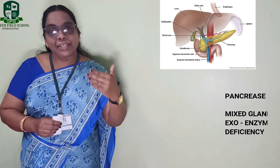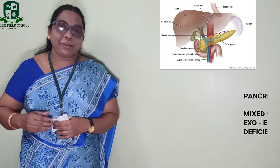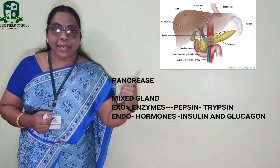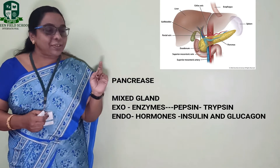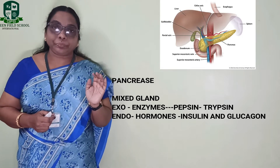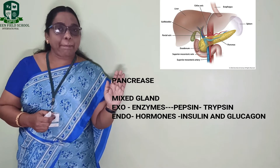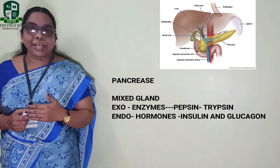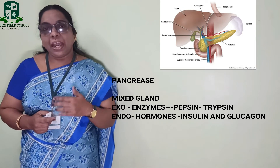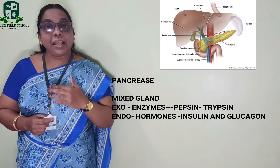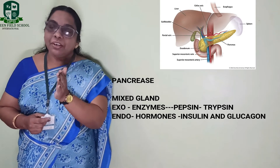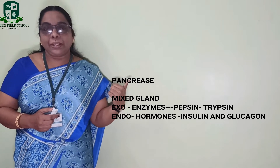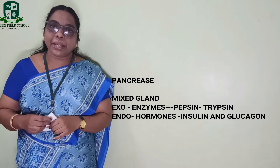Since the pancreas releases both enzymes and hormones, that is the reason this particular gland is called a mixed gland. The exocrine part of the pancreas releases enzymes named pepsin and trypsin. These two are digestive enzymes that are helpful for the conversion of complex food into simple food.